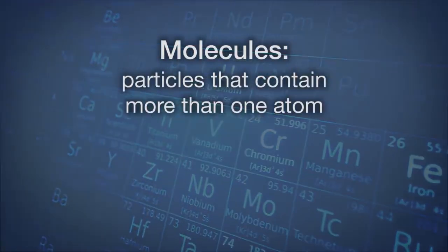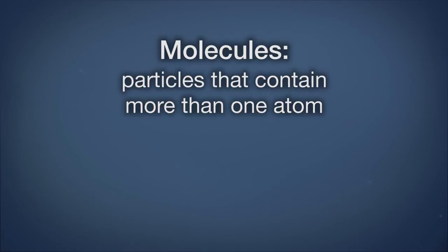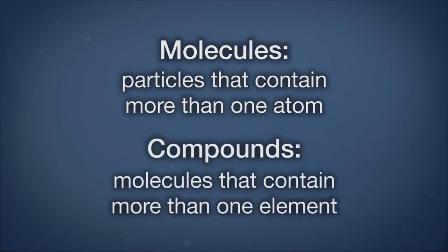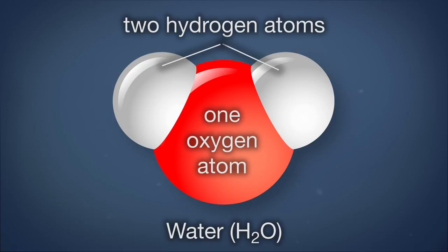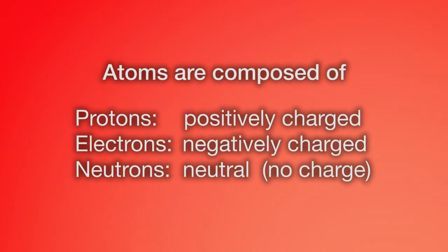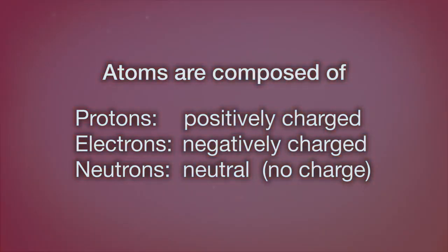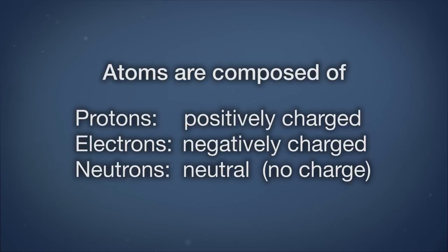Molecules are particles that contain more than one atom. Molecules that contain more than one element are called compounds. For instance, water, H2O, is a compound. Atoms can be broken down into even smaller components called protons, electrons, and neutrons. Protons are positively charged, electrons are negatively charged, and neutrons are neutral.